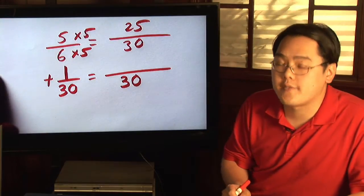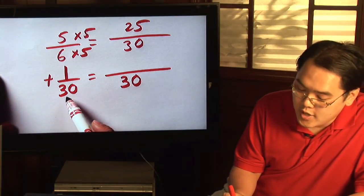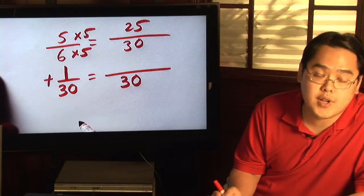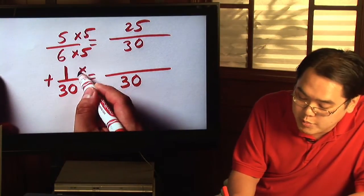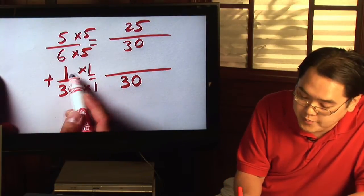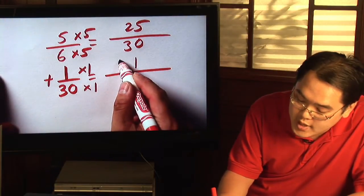Now, let's talk about the second fraction. Thirty times what is thirty? Well, thirty times one obviously gives you thirty. So there's not much of a change there because when you multiply the top by one, one times one is still one.